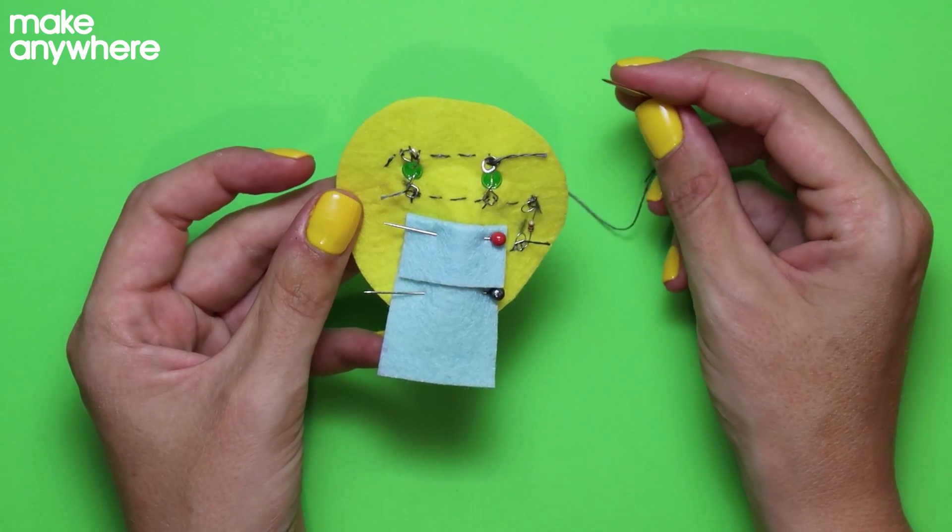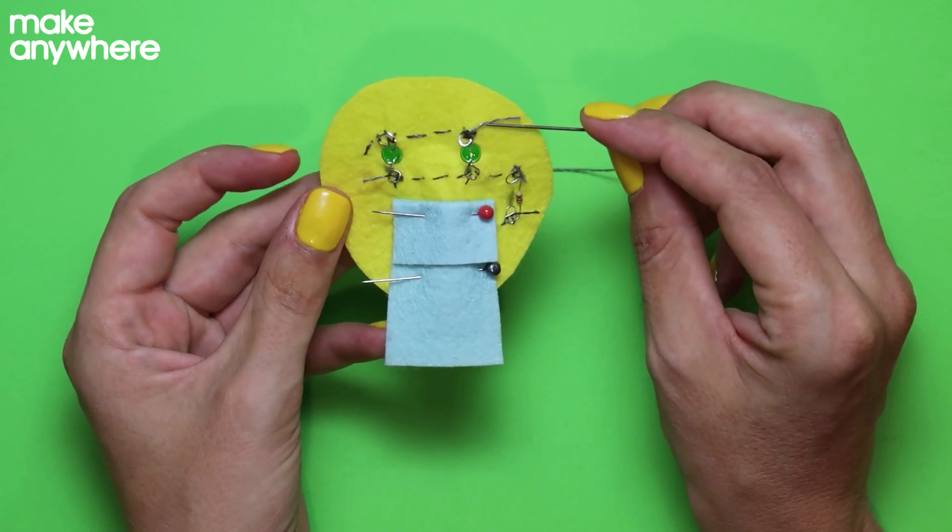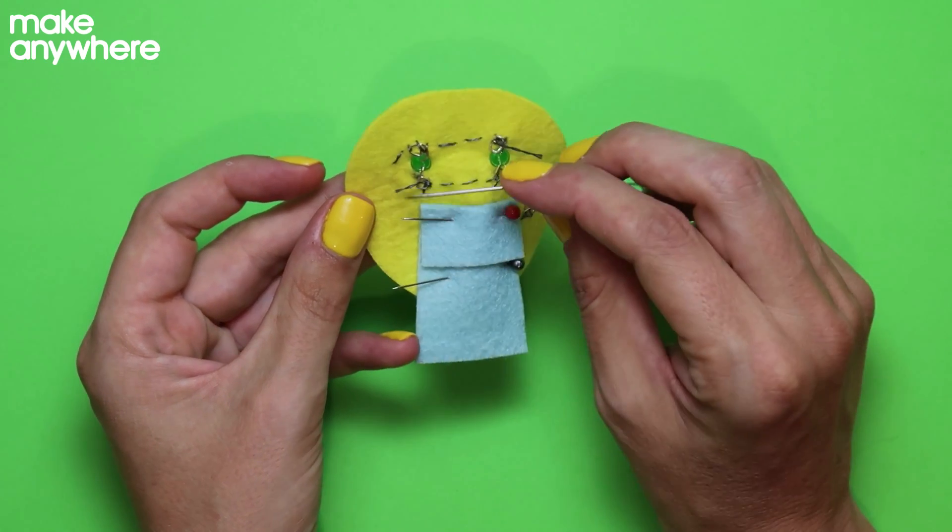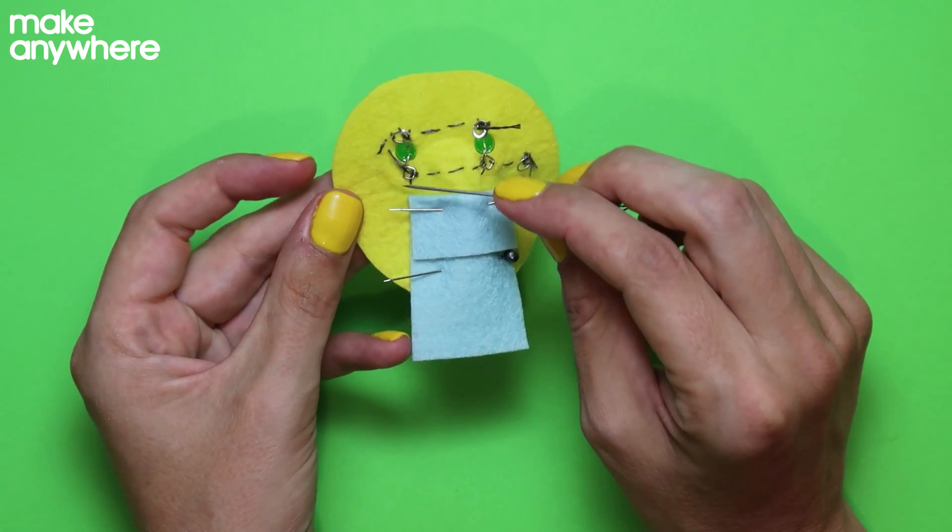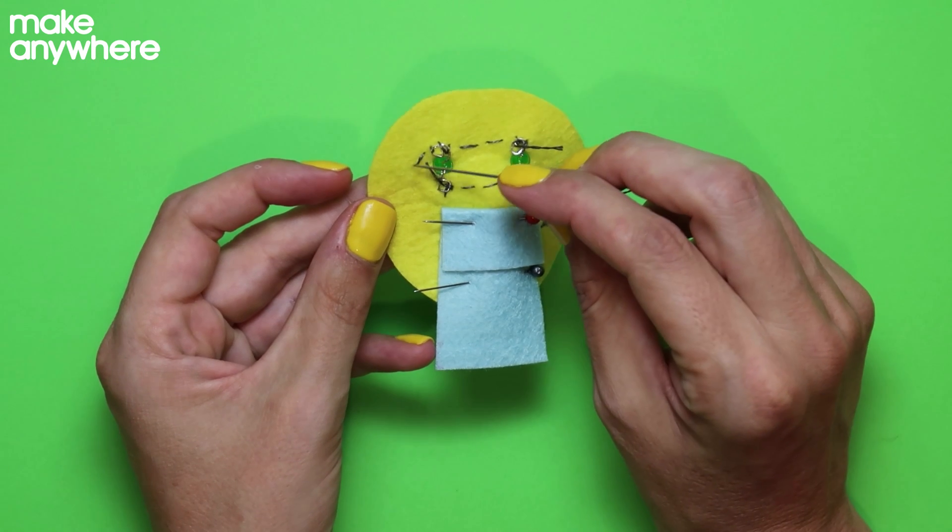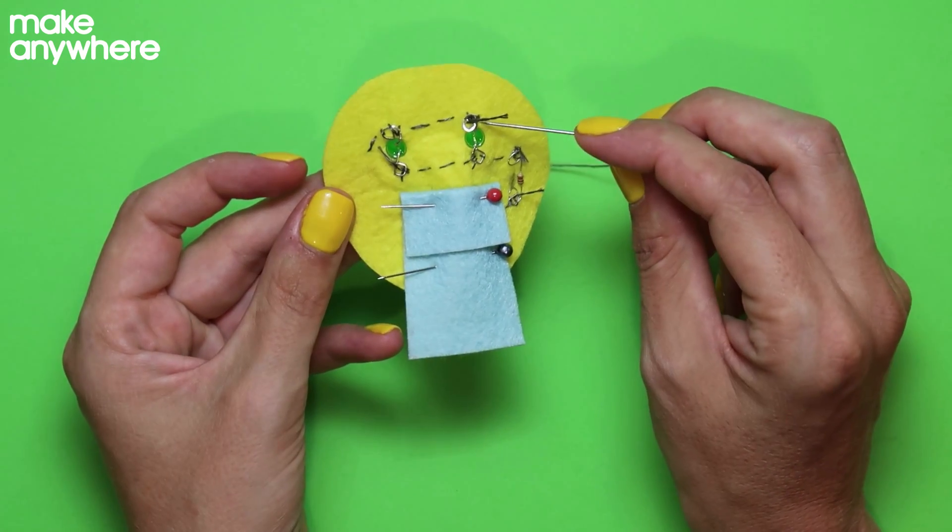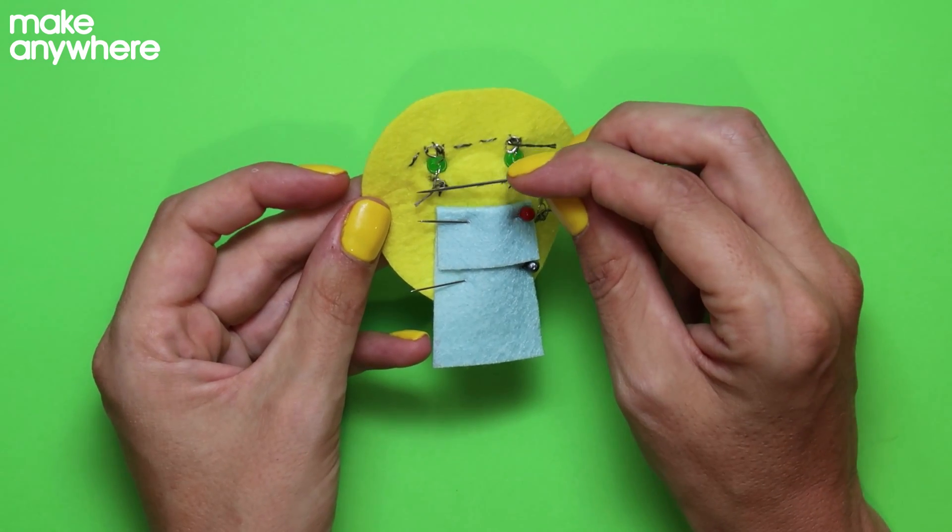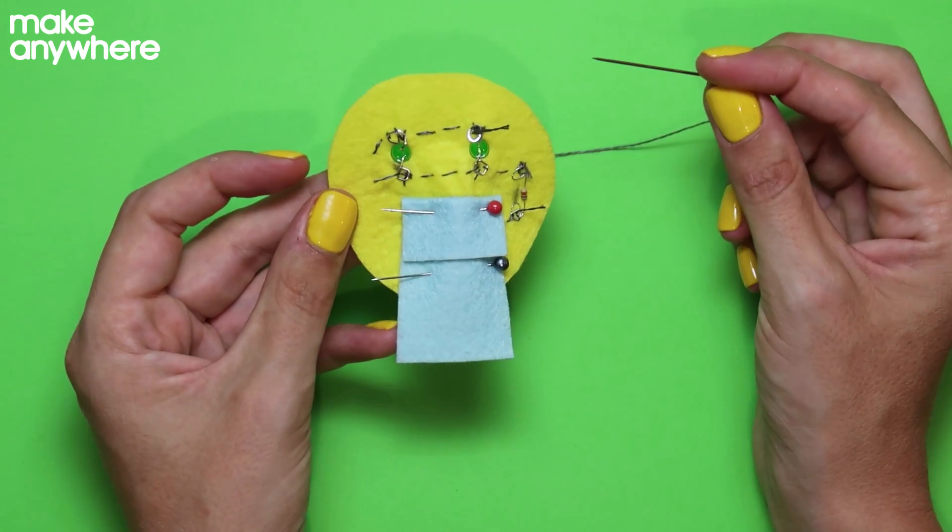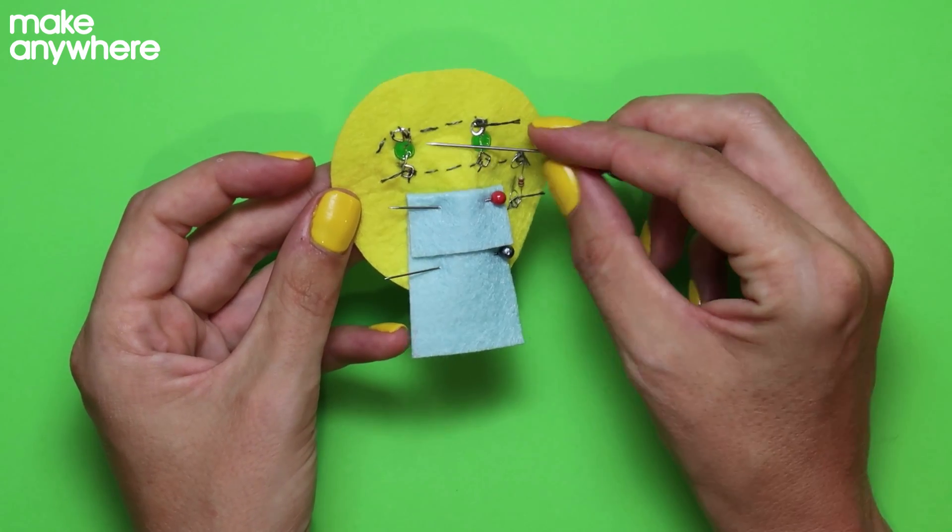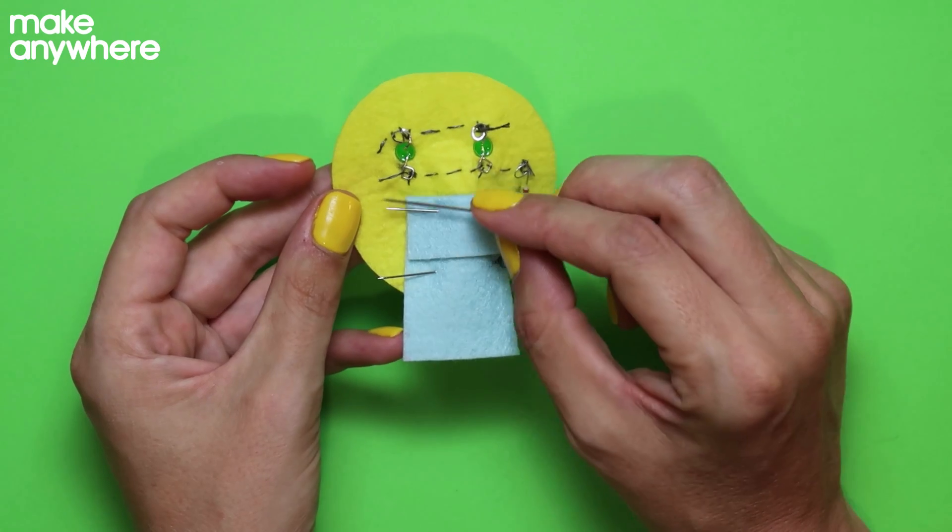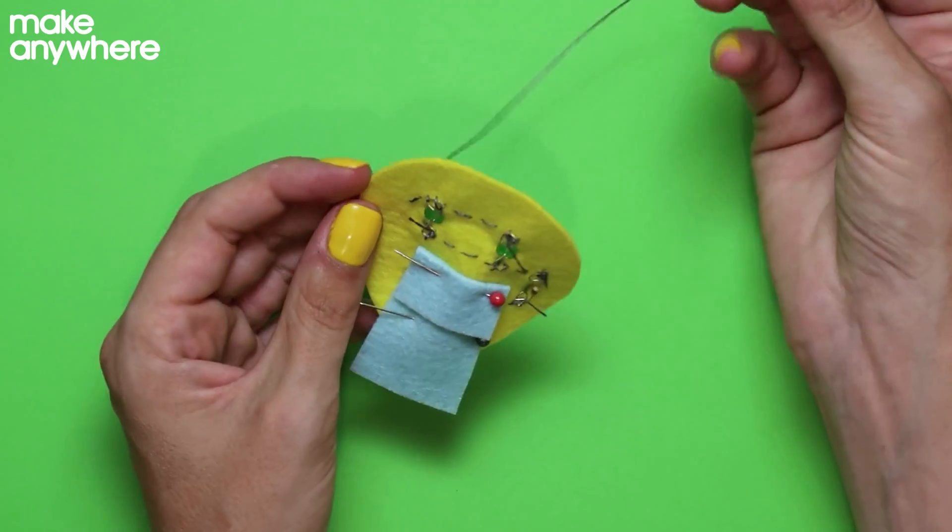One of the things that we need to watch out for are these. The little bits are left after our knots. If one that is connected to the negatives touches one that's connected to the positives, you'll get a short circuit and your lights won't work. It'll also drain your battery.